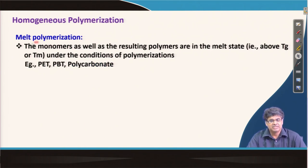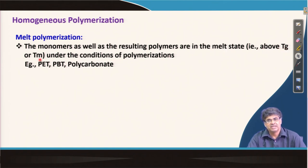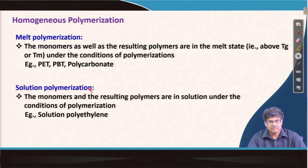In melt polymerization, as the name suggests, the reaction is carried out in the molten stage, where both monomers and the resulting polymers are in the melt state. In solution polymerization, the monomer and the resulting polymers are soluble in the solvent.